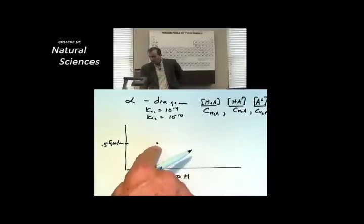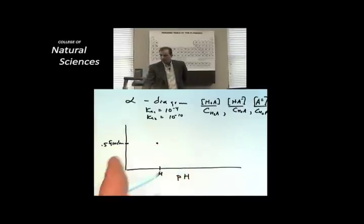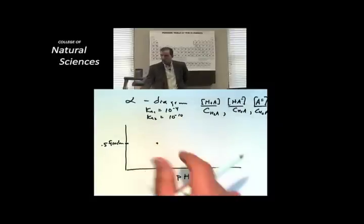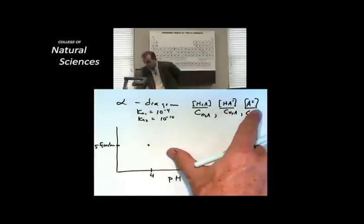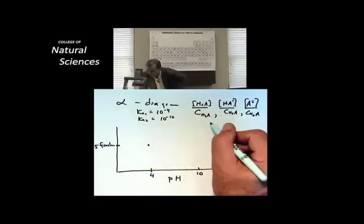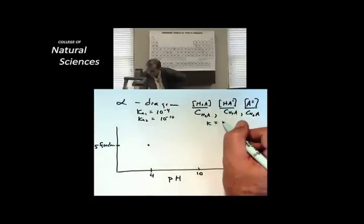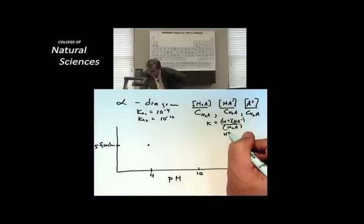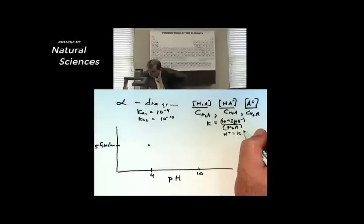Well in the same way, isn't it true that when the pH equals the pK2 at pH 10 over here, the amount of HA minus and the amount of A double minus have to be equal? If you don't think that's true, just look at this equation. This equation says K is equal to H plus times HA minus over H2A. Let's ratio these things. H plus is equal to the K value times the H2A over the HA minus.